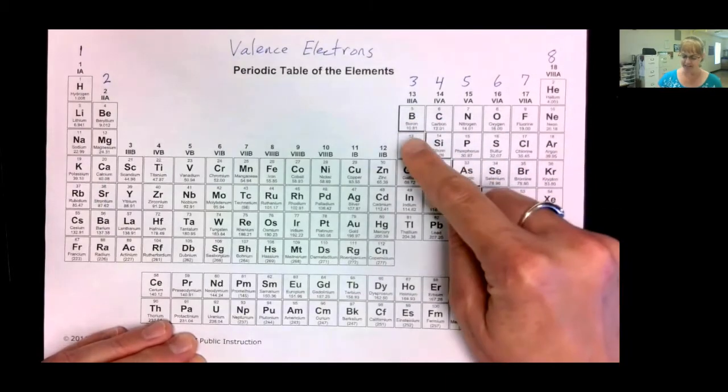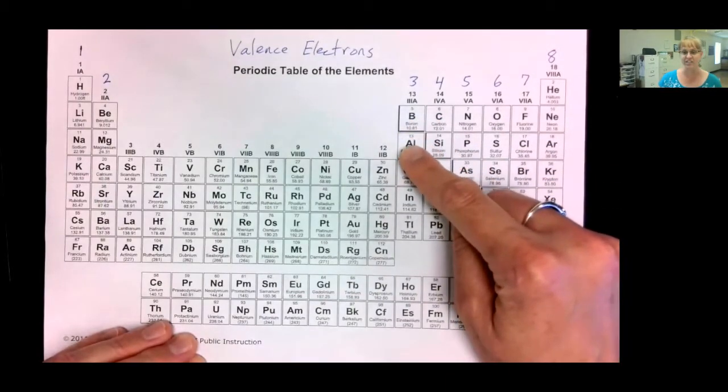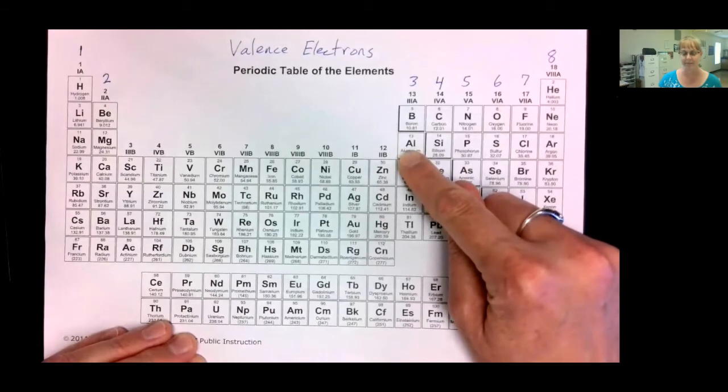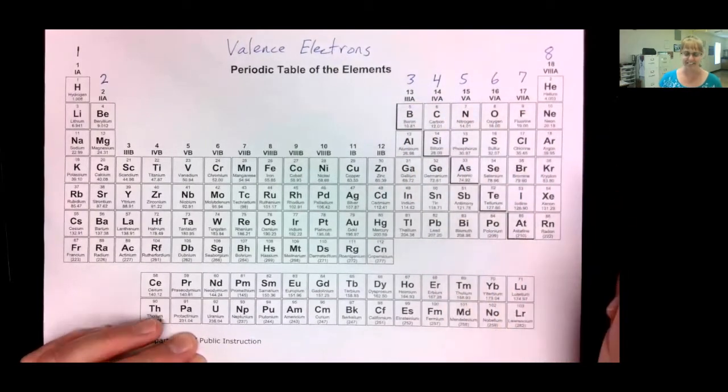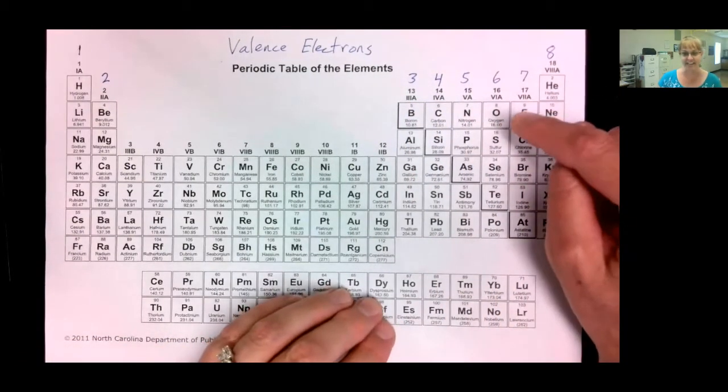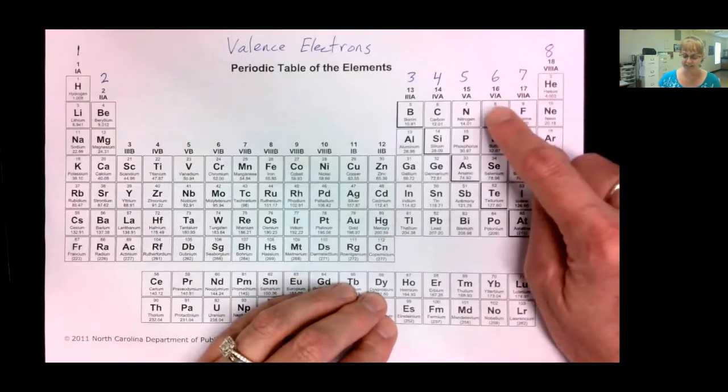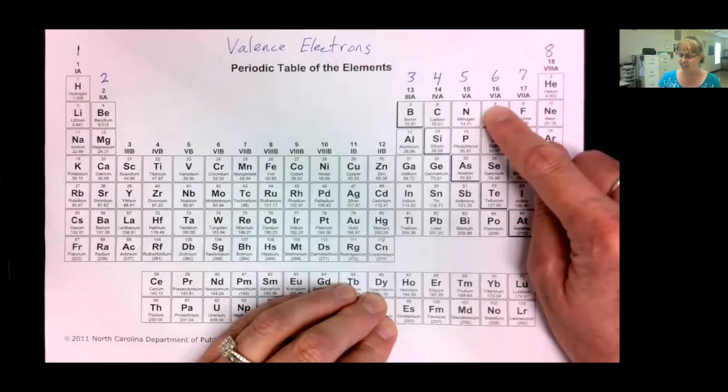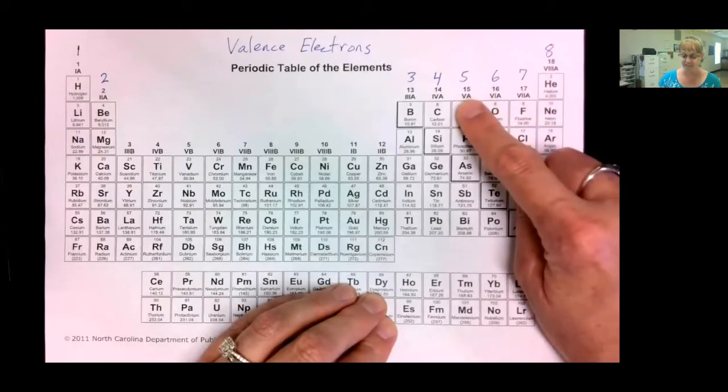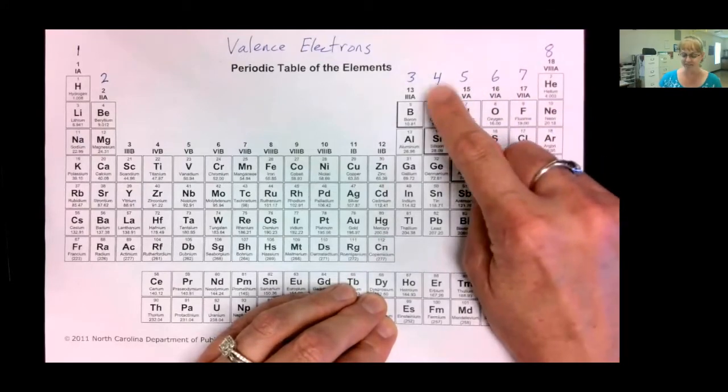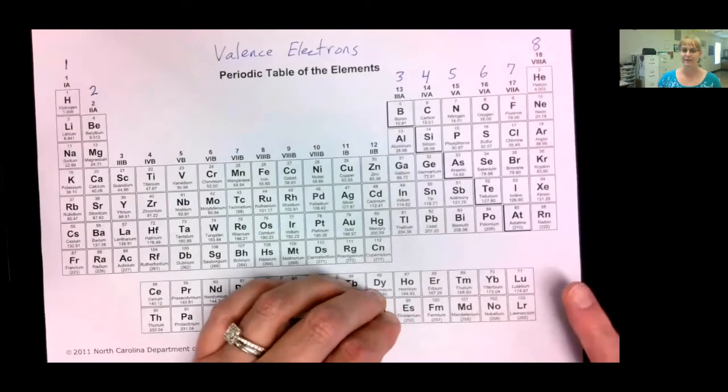Below this stair step line, aluminum would like to lose three. Above the stair step line, it gets a little different. They want to gain electrons. So, if they have seven outer, they want to gain one. Six outer, they want to gain two, so they'll have eight. Five outer, they want to gain three, gain four, and gain five.